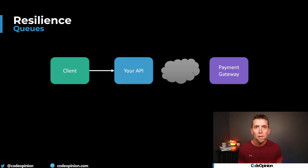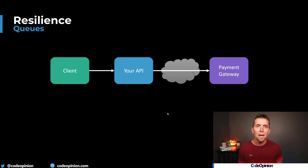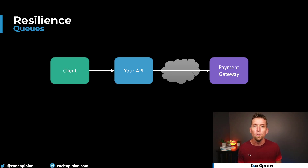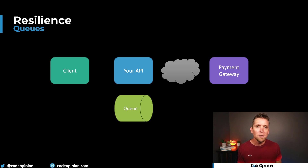The next tip is using queues and moving work asynchronously, because it gives you more options to deal with failures. As an example: our client makes a request to our HTTP API and the external service we need to hit synchronously is a payment gateway. We really don't have any option for a fallback — that's the one we have to use. But if there's a failure, we still want to be able to process that request. In a lot of circumstances you can actually move that work asynchronously.